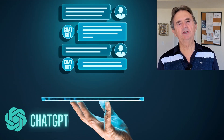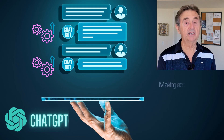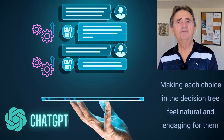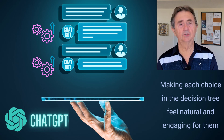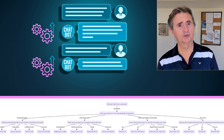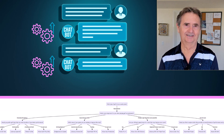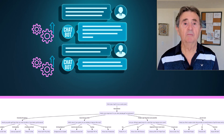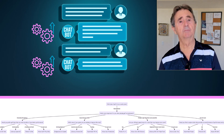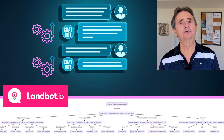So there you have it. You can see how ChatGPT helped refine the dialogue for our intended audience, making each choice in the decision tree feel natural and engaging. If we were to continue this interaction to include all paths and outcomes of the decision tree, we'd have ourselves a great golf ball-selling wizard of a chatbot. With the conversation flow well-structured, it would now be time to implement it on your chosen chatbot platform, like PlanBot, and let real-world users put it to the test.